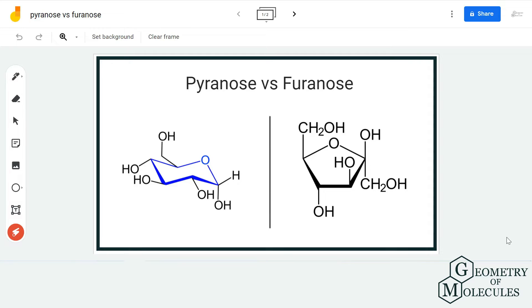In pyranose, we have a hexagonal structure with five carbon atoms and one oxygen atom. What you see over here is the oxygen atom, and all these points represent the carbon atoms.